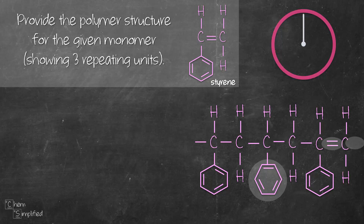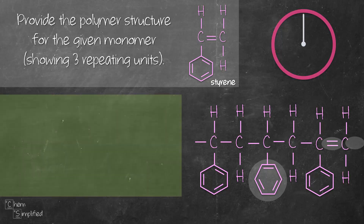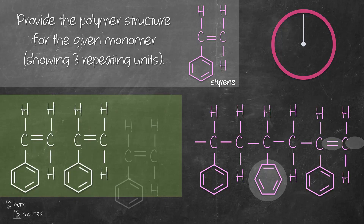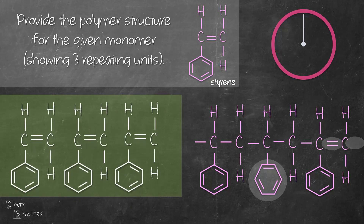Now let's see how the correct answer looks. We start by drawing the monomer. Since the question asks for three repeating units, we draw three monomers. Then imagine the double bond from the first monomer moves to form a single bond to the second monomer like this, and the same goes for the other two monomers like this.